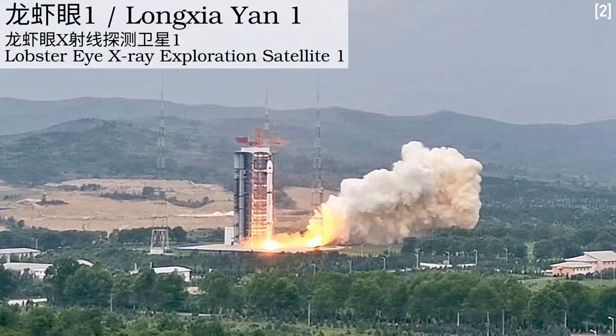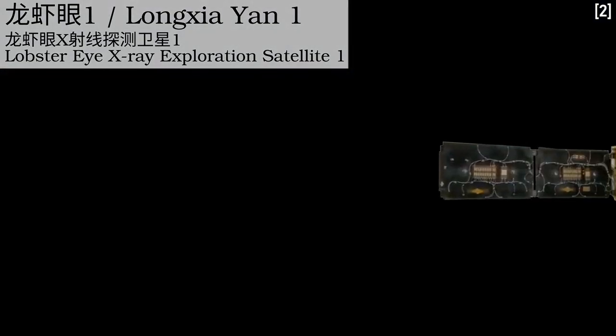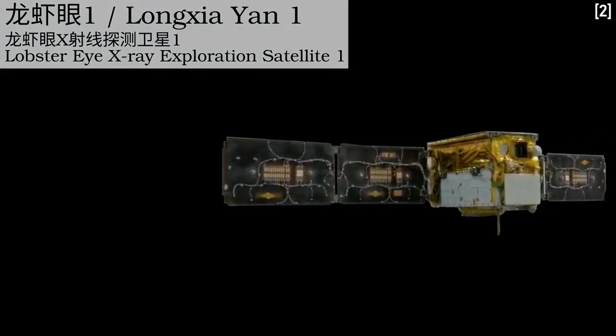The very first space mission is the Chinese Longshian 1, or Lobster Eye X-ray Exploration Satellite 1. This is reportedly a joint project by Nanjing and Hong Kong universities. There are few peer-reviewed papers about the mission, but with a launch mass of just 50 kilograms, this appears to be more of a technology demonstration than observing a particular scientific phenomenon.